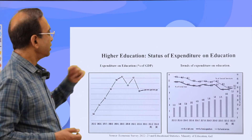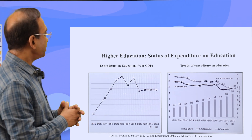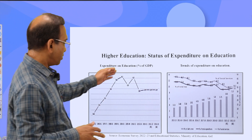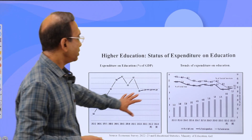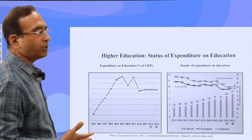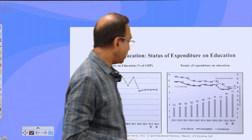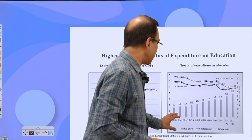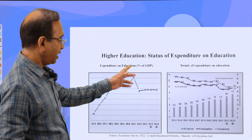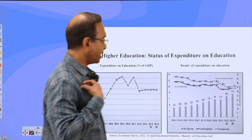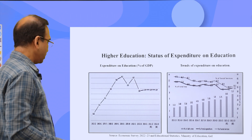Now the other story is about expenditure. The expenditure on education as a percentage of GDP has dropped from 4.1% to 2.8% and has been hovering around 3%. This is a major cause of concern because India needs more spending for developing human capital. In absolute terms the expenditure is increasing — it is in rupees lakh crore — but as a percentage of total expenditure and of social service expenditure, education spending by the government is coming down.